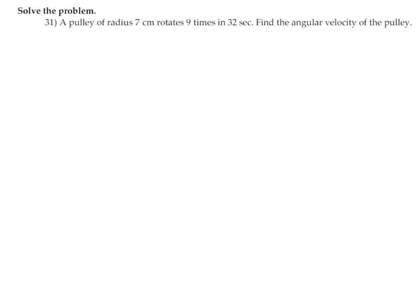A pulley of radius 7 centimeters rotates 9 times in 32 seconds. So this information is revolutions per second. Rotating 9 times is 9 revolutions. They give you revolutions per second and they want the angular velocity in radians per second.